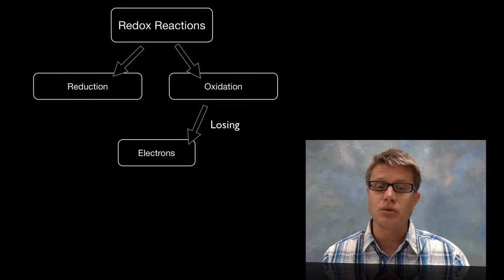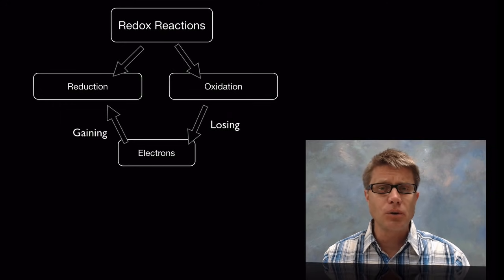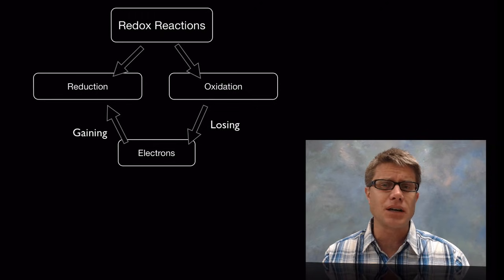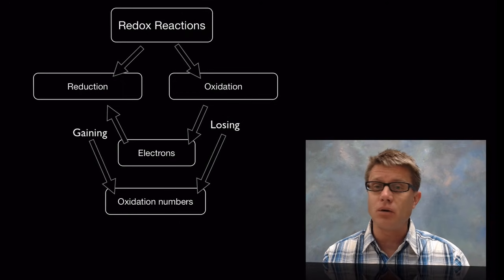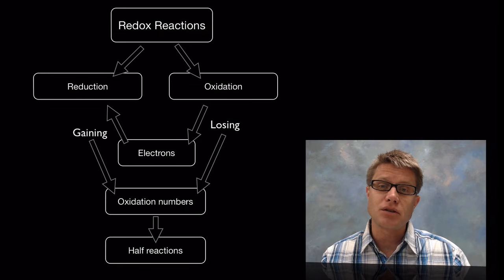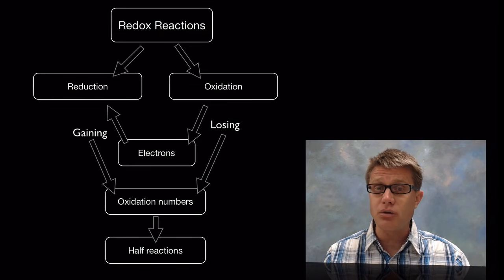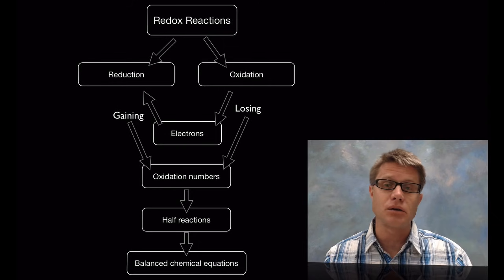The oxidation portion is going to be the losing of high energy electrons, and reduction is going to be the gaining of those electrons. But when you're looking at a chemical equation we don't put electrons in the equation, so often it's hard to figure out where these electrons are going. We use something called oxidation numbers to figure out where the electrons are going, and we can break it down into half reactions that show the electrons, and then combine that back into a balanced chemical equation.